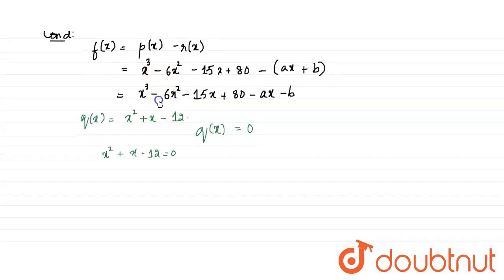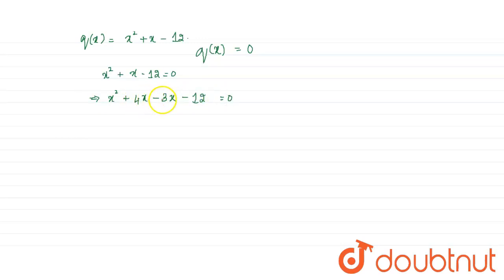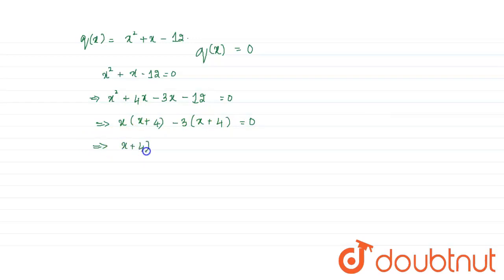First let us find the factors of Q of x. If we assume Q of x equals 0, that means x squared plus x minus 12 equals 0. By splitting the middle term, in order to get minus 12, we multiply the middle term coefficients to get x squared plus 4x minus 3x minus 12 equals 0. Since plus 4x minus 3x equals plus x, and plus 4 times minus 3 equals minus 12, the condition is satisfied. So we take x common to get x plus 4, and minus 3 common to get x plus 4 equals 0.